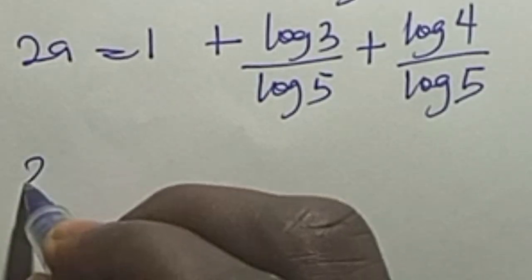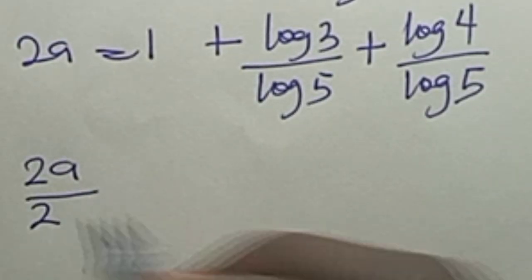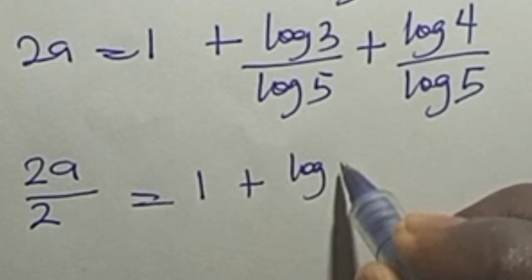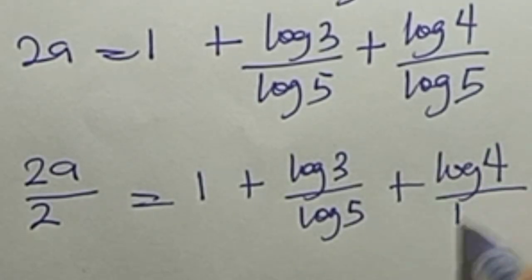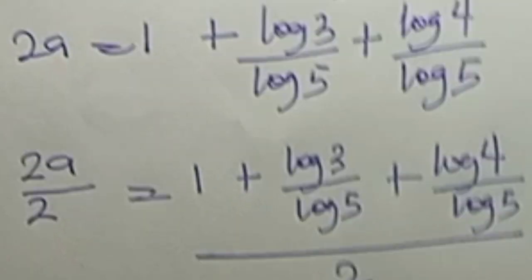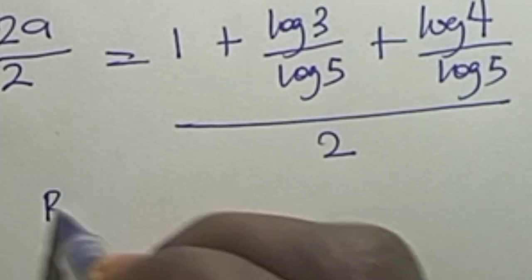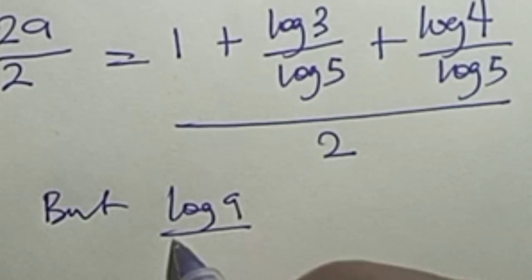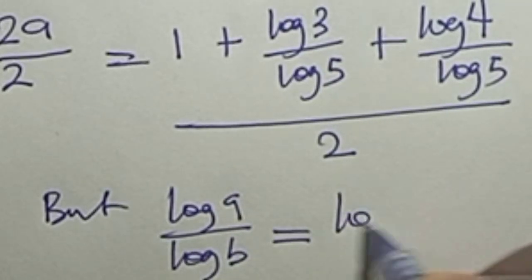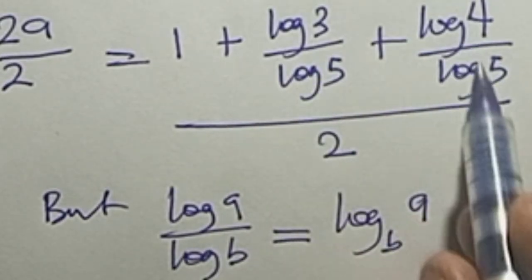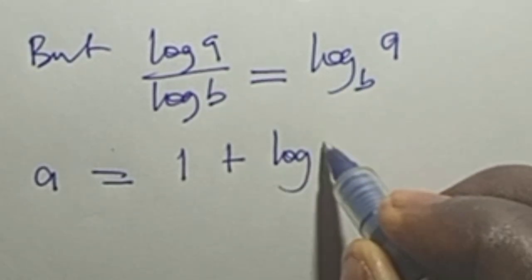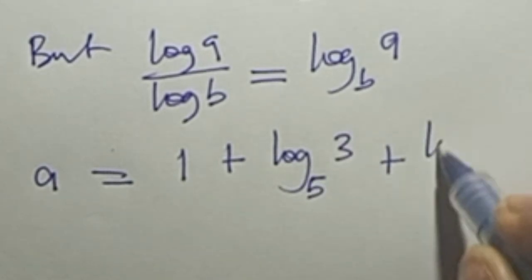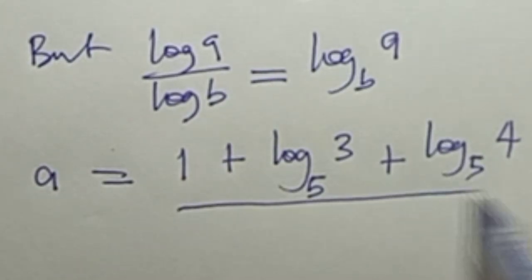Dividing through by the coefficient of a, which is 2: a equals the quantity 1 plus log 3 over log 5 plus log 4 over log 5, all over 2. But log A over log B is the same as log A base B. So this simplifies and our a equals 1 plus log base 5 of 3, plus log base 5 of 4, all over 2.